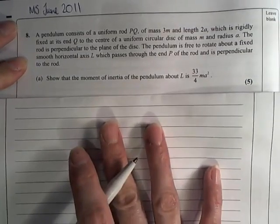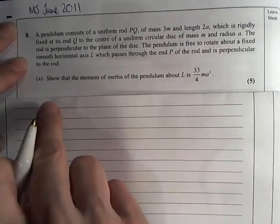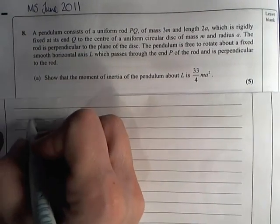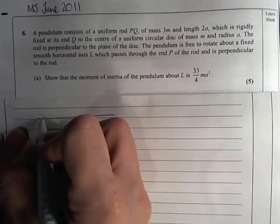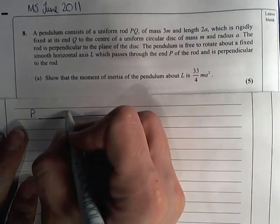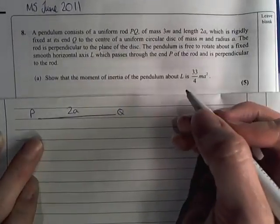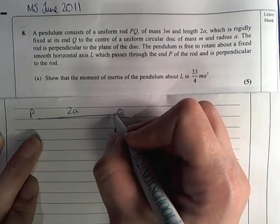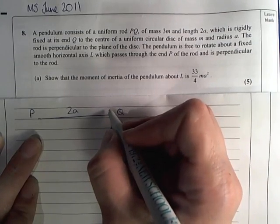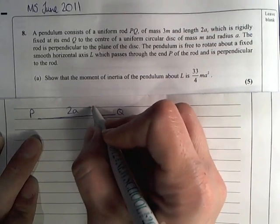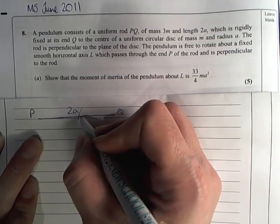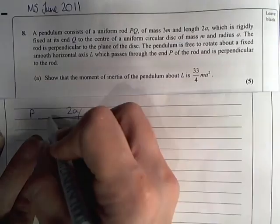First things first, let's start with part a. So I have a pendulum which consists of a uniform rod PQ of mass 3m. I'm just going to draw this, PQ, 2a long, which is rigidly fixed at its end Q to the center of a uniform circular disk of radius a.